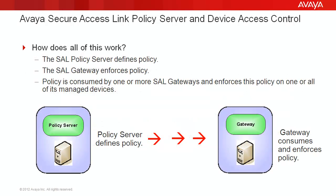So how does all this work? Well, it's quite simple. The job of the policy server is to define policy, while the job of the gateway is to enforce it. Any policy that we define in our policy server is consumed by one or more of our integrated gateways and enforced against all of its managed devices.